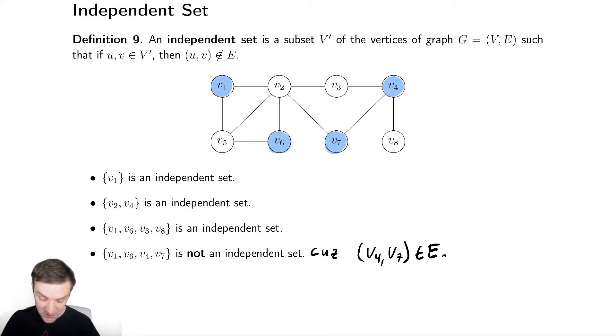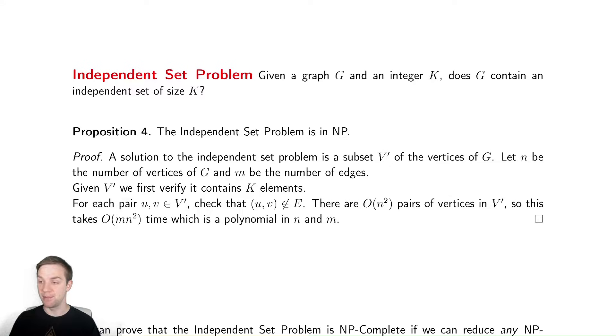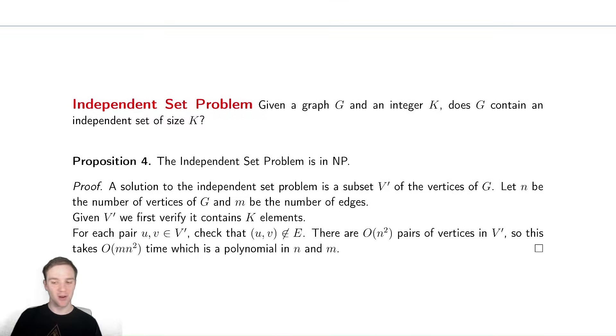Let's first prove that it is in NP. A lot of these proofs for NP are going to be very simple: just check the answer. A solution to the independent set problem is a subset V prime. That is what a solution is. If they give me a set V prime, I need to make sure it's the right size. That takes O(K).